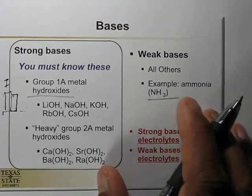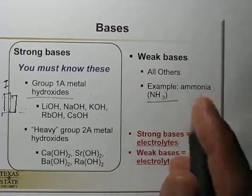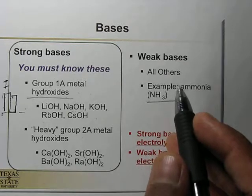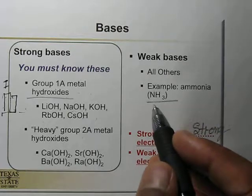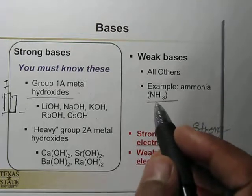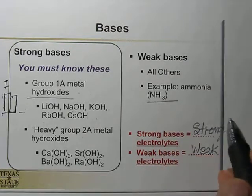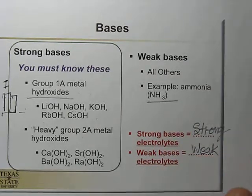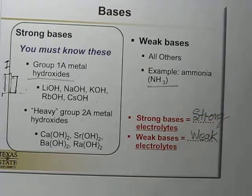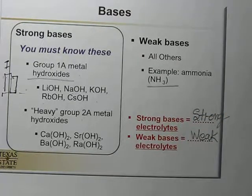Remaining bases are considered weak bases — for example, ammonia. Ammonia is considered a weak base, and weak bases behave like weak electrolytes.